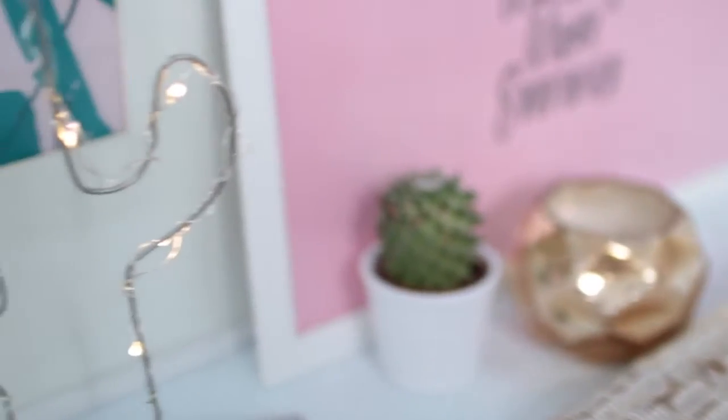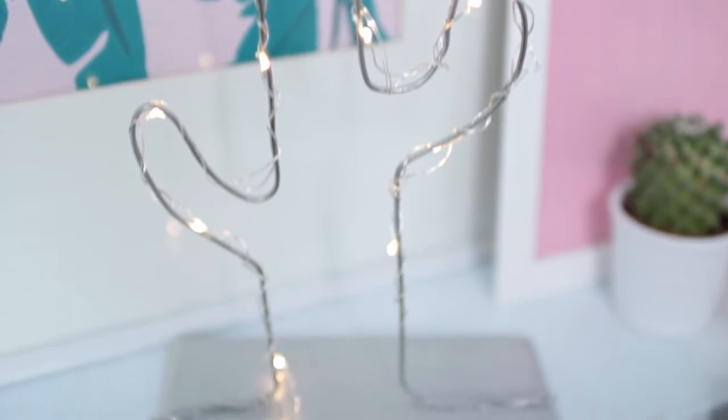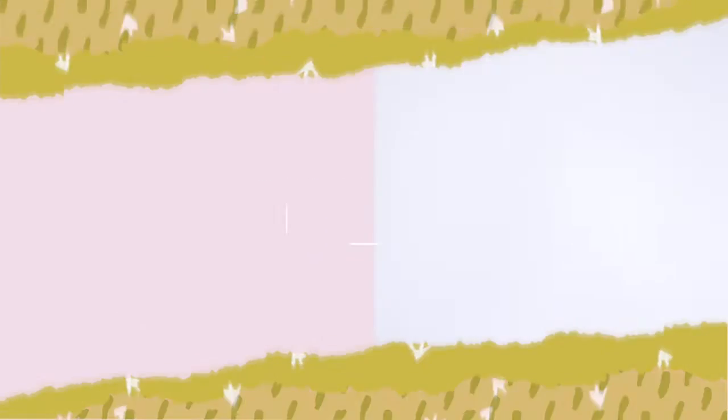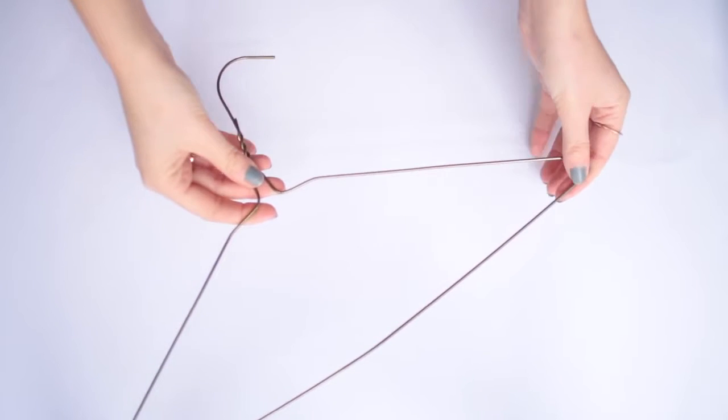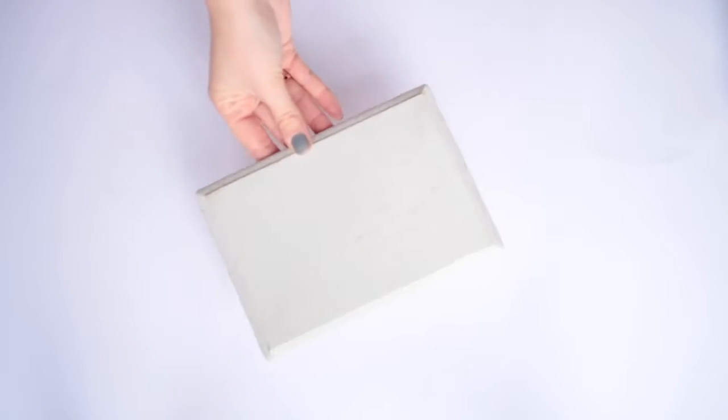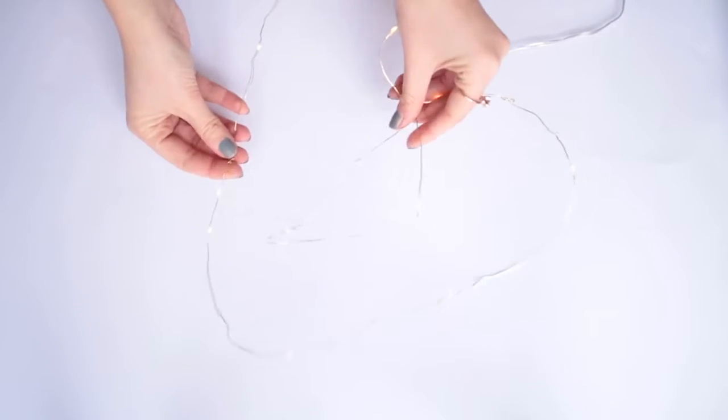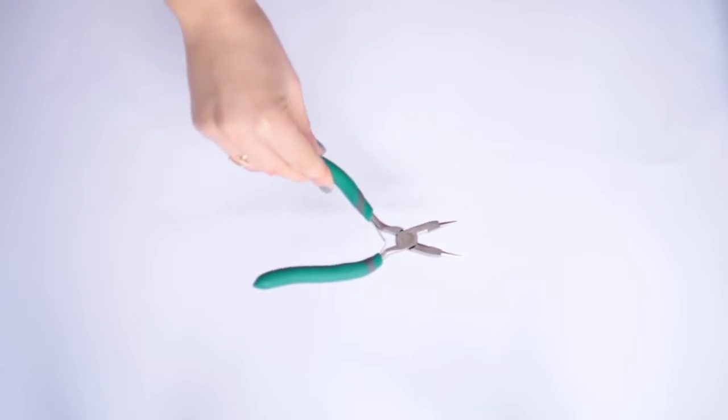First up I want to show you guys how to make this really fun cactus light and it's so very simple to make and you can make it in a lot of different shapes if you would rather do something different. You will need a wire coat hanger, a wooden plaque, some battery operated firefly lights and some jewelry pliers.